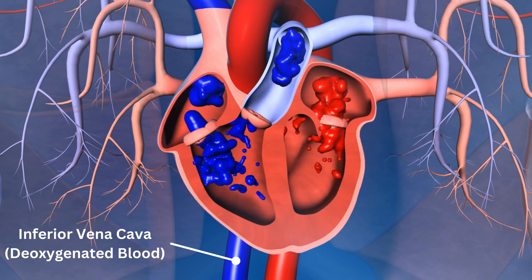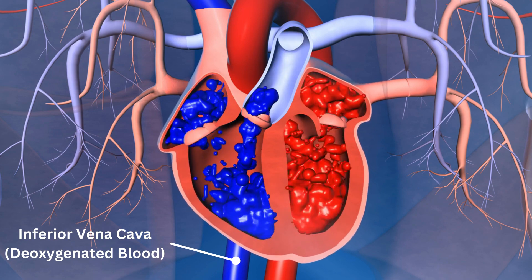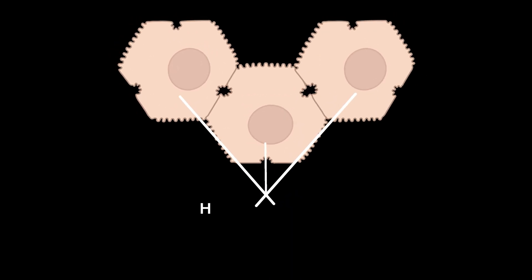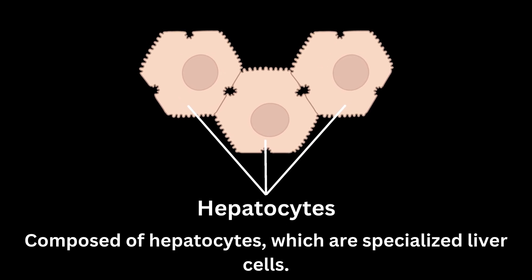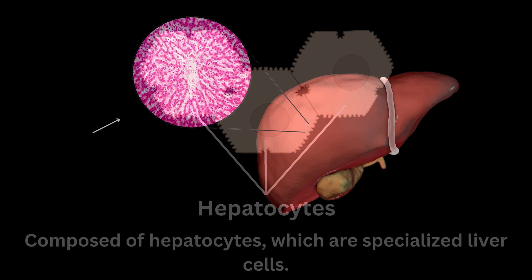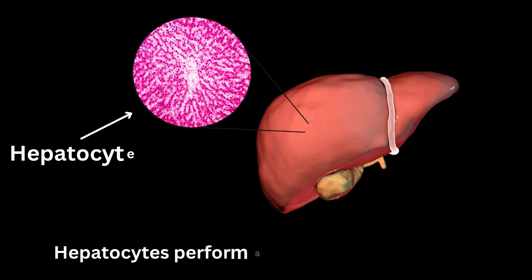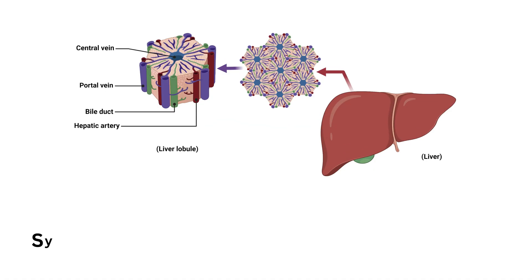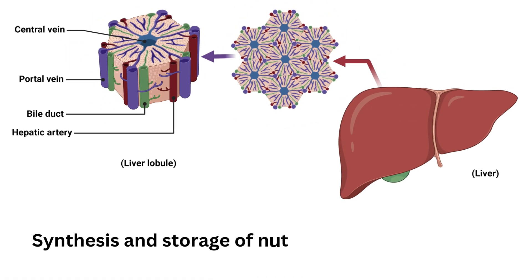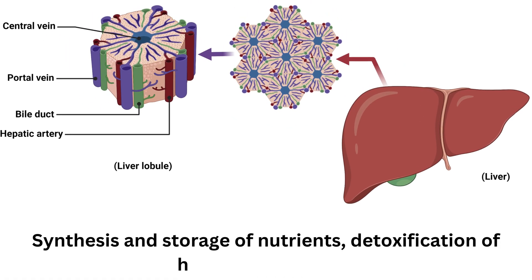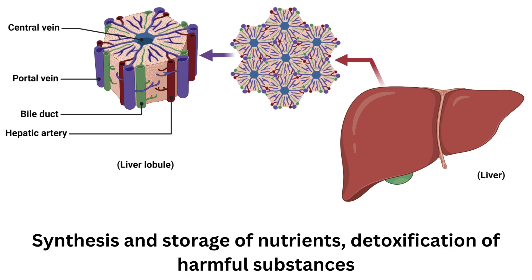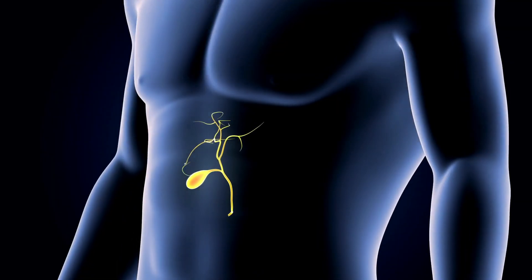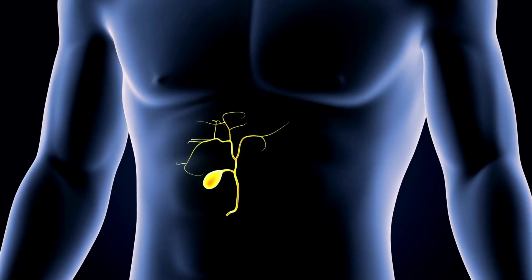The liver is primarily composed of hepatocytes, which are specialized liver cells. Hepatocytes perform a wide range of functions, including the synthesis and storage of nutrients, detoxification of harmful substances, and the production of bile.